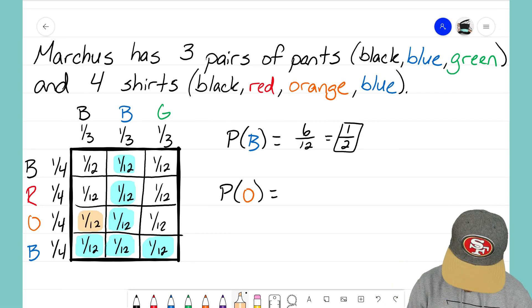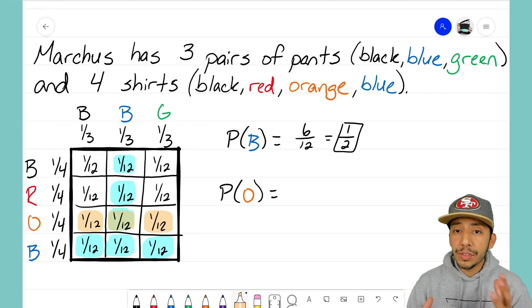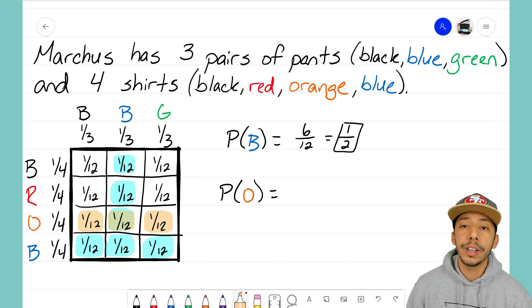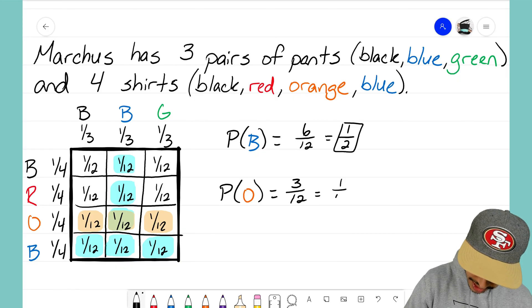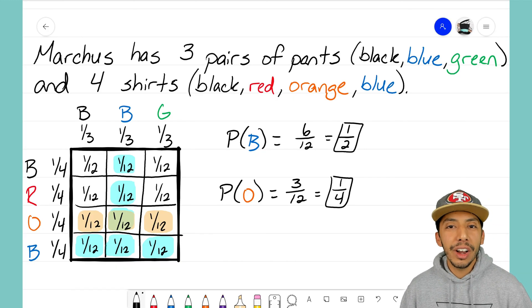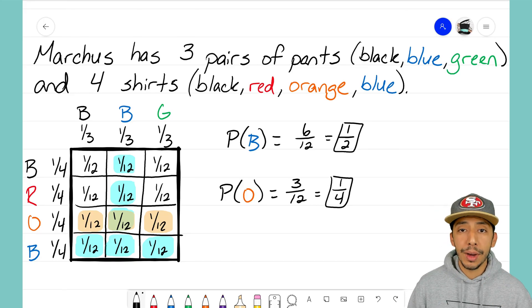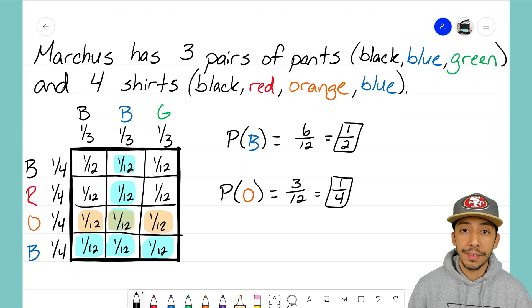Well, I think this is the orange shirt section, that's his row there for orange shirts. And notice that he's going to have three different outcomes, three different possibilities for wearing that orange shirt, which means that his fraction is going to be three over twelve, which reduces to one fourth.